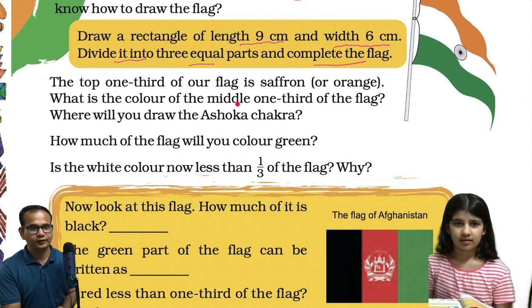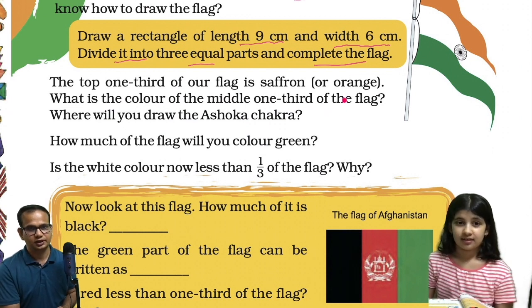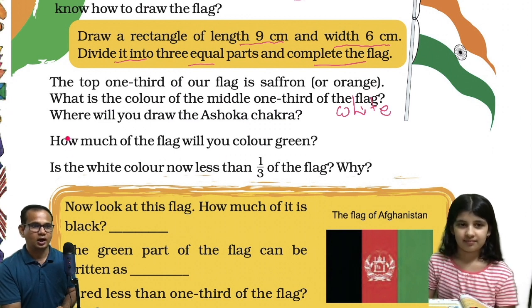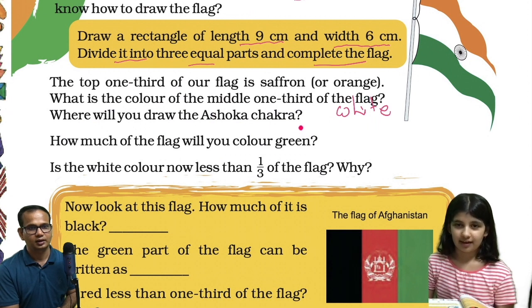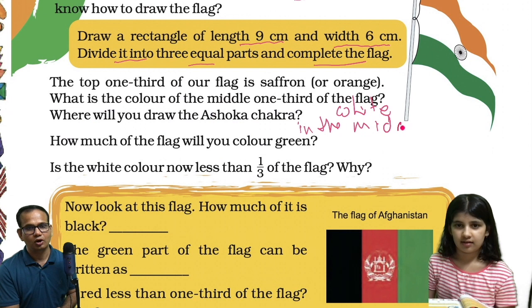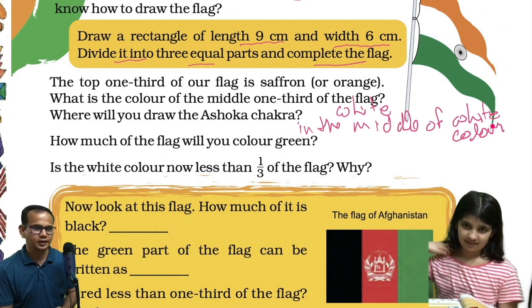What is the color of the middle one third of the flag? — White. Good. Shall I write here? White. And where will you draw the Ashoka Chakra? In the middle of the white color.